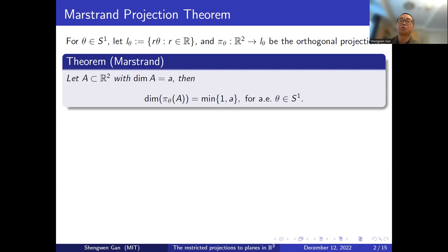It is called the Marstrand projection theorem. For theta in S1, which is the unit circle in R2, let L_theta be the line in the direction theta, and we also use pi_theta to denote the orthogonal projection onto L_theta. Here is the statement: let A be a subset of R2 with dimension A. Then the Hausdorff dimension of pi_theta of A equals the minimum of 1 and A, for almost every theta in S1.